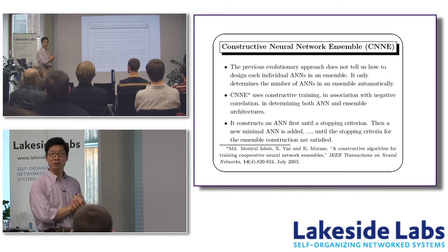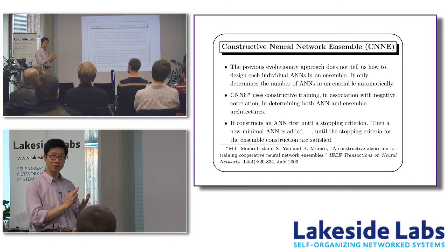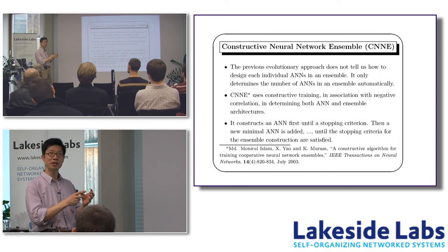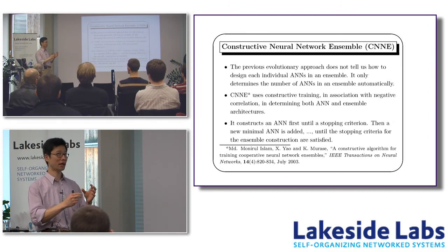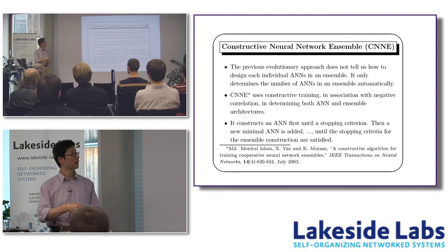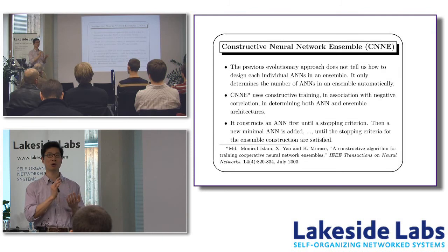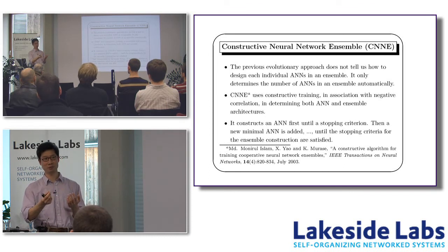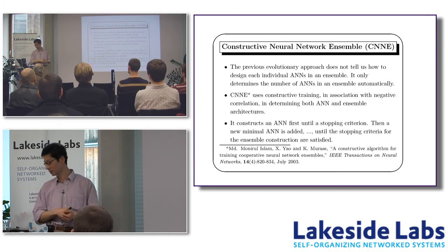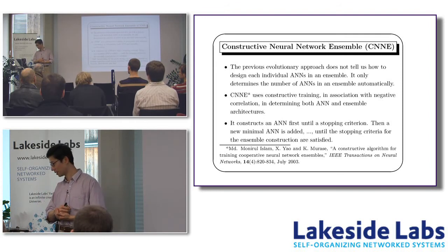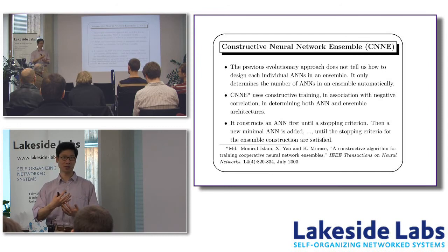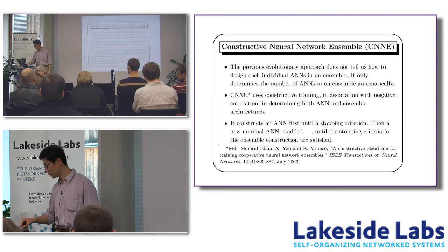The second algorithm tries to answer: now that I know how to determine the number of neural networks, how do I design individual neural networks? Should they be the same or should they look different? How do I decide the number of hidden nodes? This second work uses a constructive method to construct individual neural networks. That constructive method can also give heuristic information about when to stop constructing a neural network and when to start adding a different neural network. When we add a new neural network, we start growing and constructing that one as well. So it depends on heuristic information based on statistics reflected in the new premises.